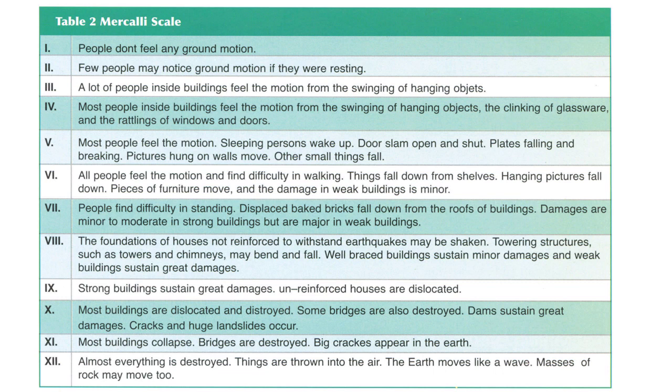Level 6: all people feel the motion and have difficulty walking. Things fall down from shelves, hanging pictures fall down, furniture moves, and damage in weak buildings is minor. Level 7: people find difficulty in standing, and even strong buildings are damaged.